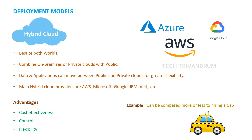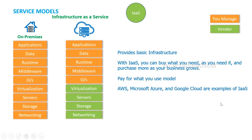Those are the three different types of deployment models of cloud computing. The next classification is based on the service models. First, consider the on-premises setup. In the on-premises setup, all components — networking, storage, servers, virtualization, operating system, middleware, runtime, data, and applications — all these things we need to manage ourselves.